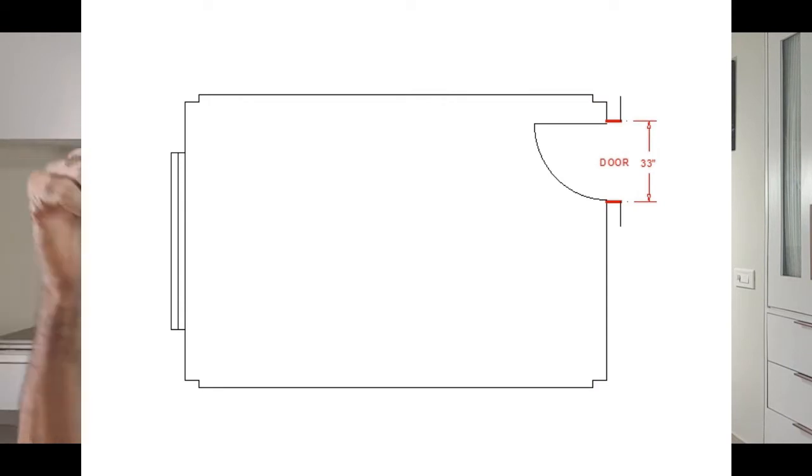Once the sketch of the plan is ready, you start from the main door. Measure the width of the door including the frames, out to out, and write it on the sketch. Then from there onwards you go clockwise around the room, writing down the measurements of each of the lengths.